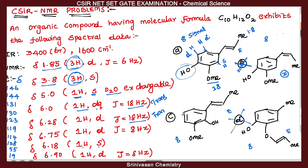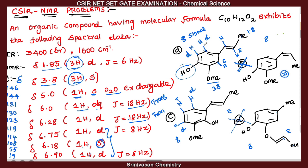Looking at options C and A: one hydrogen singlet, one hydrogen doublet, another one hydrogen doublet. With J equal to 18 Hz, that is the trans configuration of single hydrogens on the double bond. For option C: singlet, one doublet, one doublet. Analyzing option A: singlet — this is a singlet. The answer is option A, which is correct.